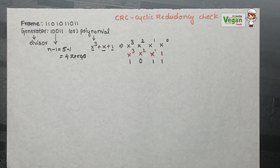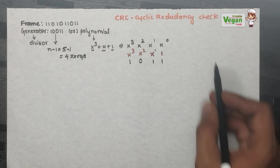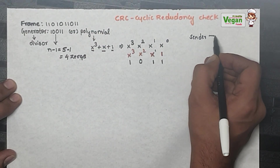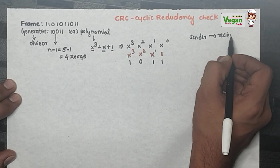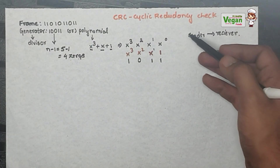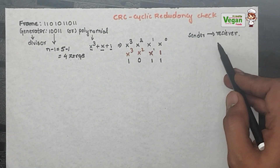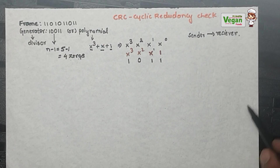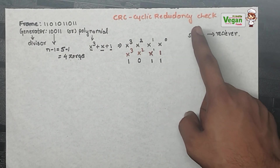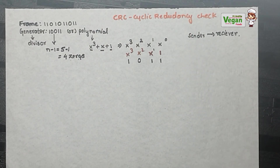In Cyclic Redundancy Check, whenever a sender is sending a message — for example, you are sending a message to your friend who is the receiver — if during communication there is any loss of information or mismatch, the error will be checked. That is, error detection is done using the Cyclic Redundancy Check.